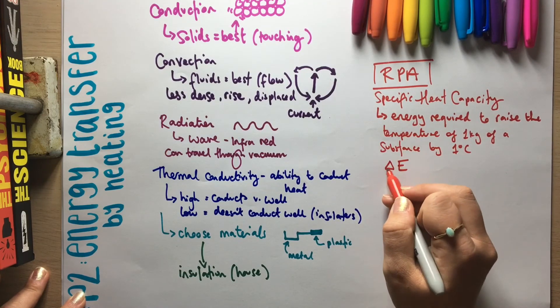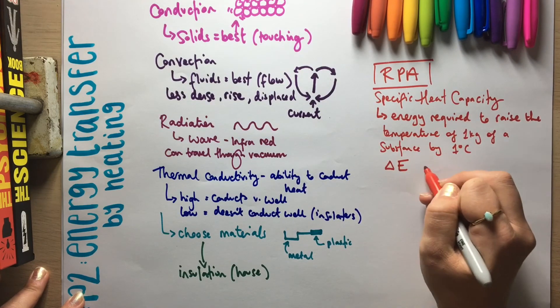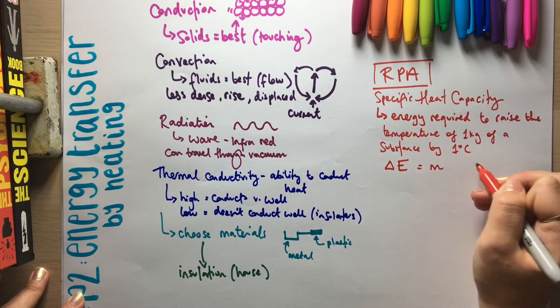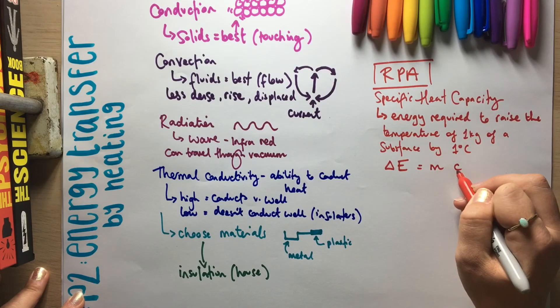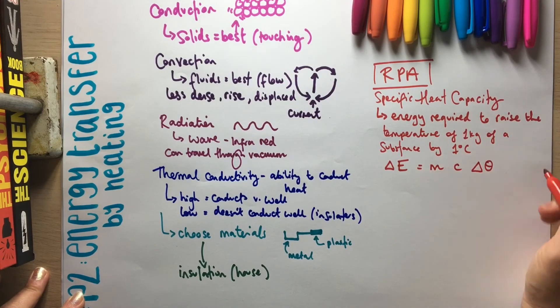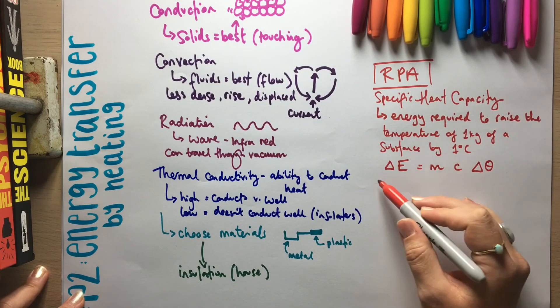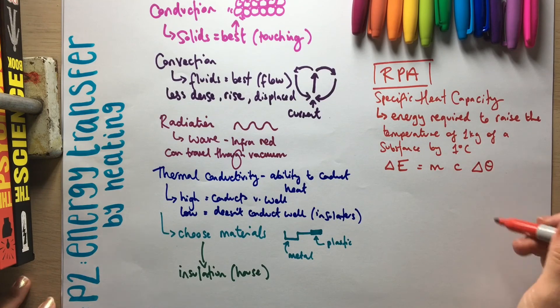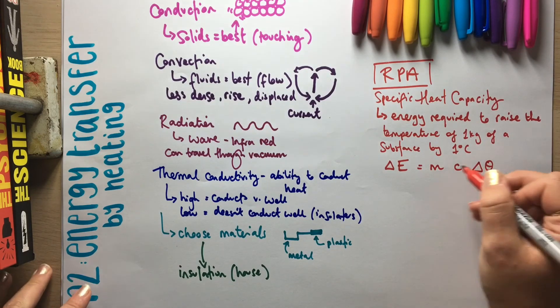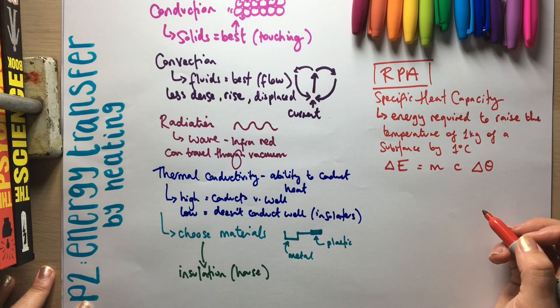You get given the equation. So the change in energy, delta E, this triangle means change. The change in energy is equal to the mass multiplied by the specific heat capacity multiplied by the change in temperature, delta θ. You get given this in words on the equation sheet as well. I've written in symbols because it's a very long equation to write out otherwise. So you get given this. You do not need to learn it off by heart.